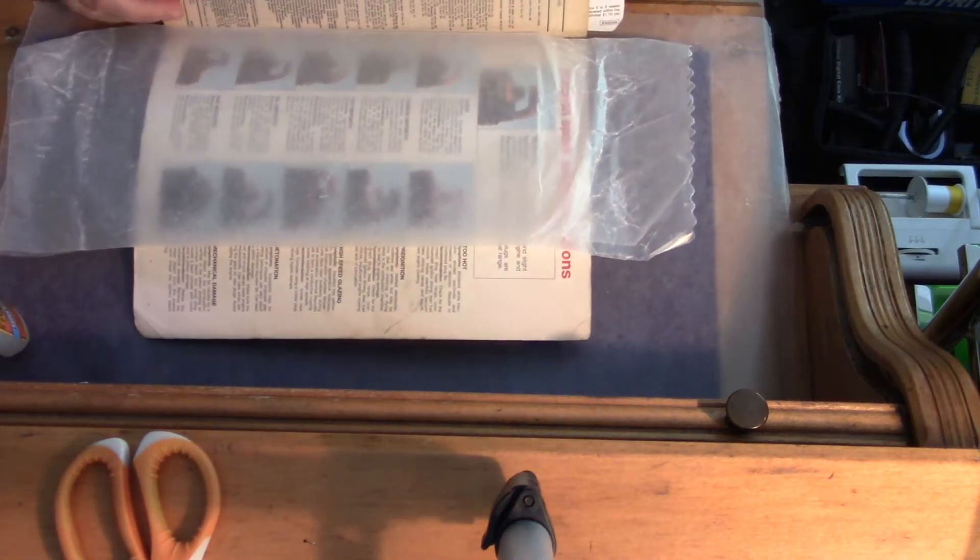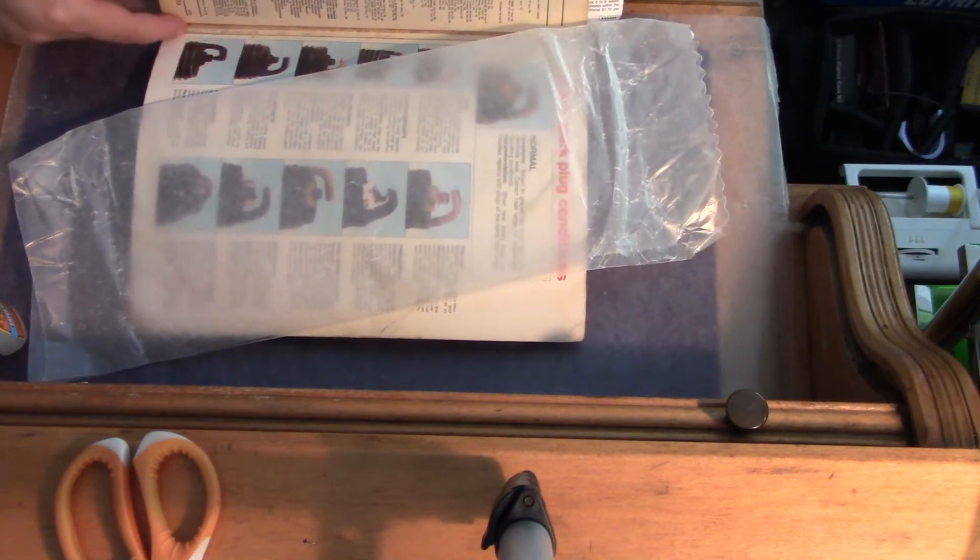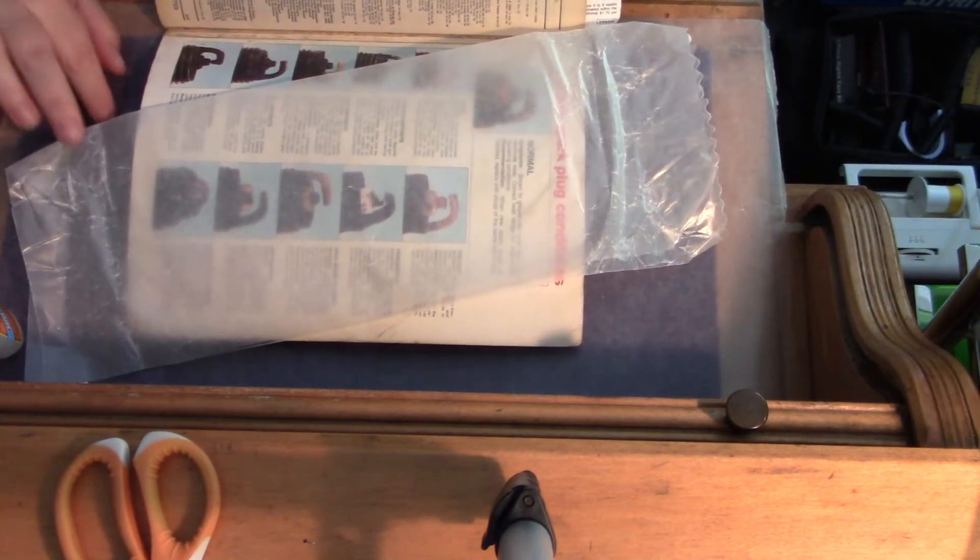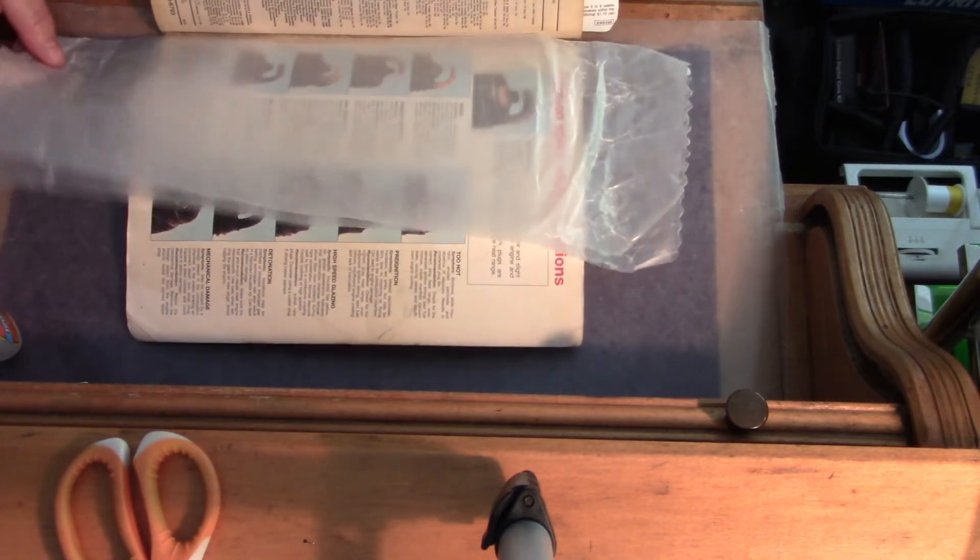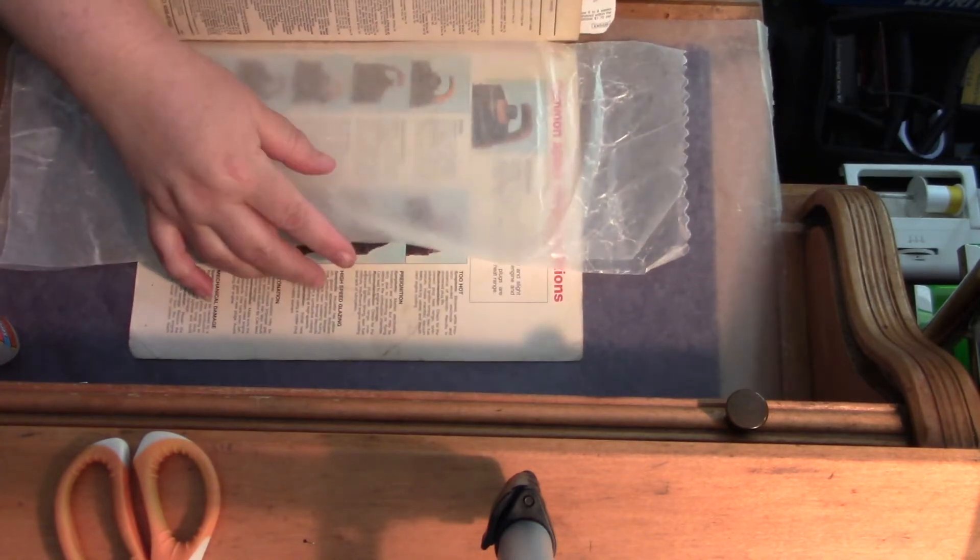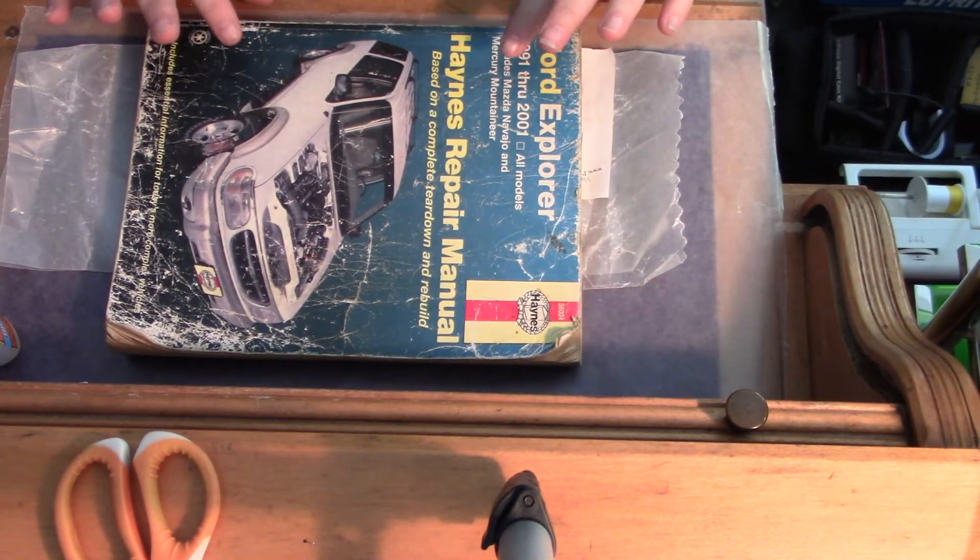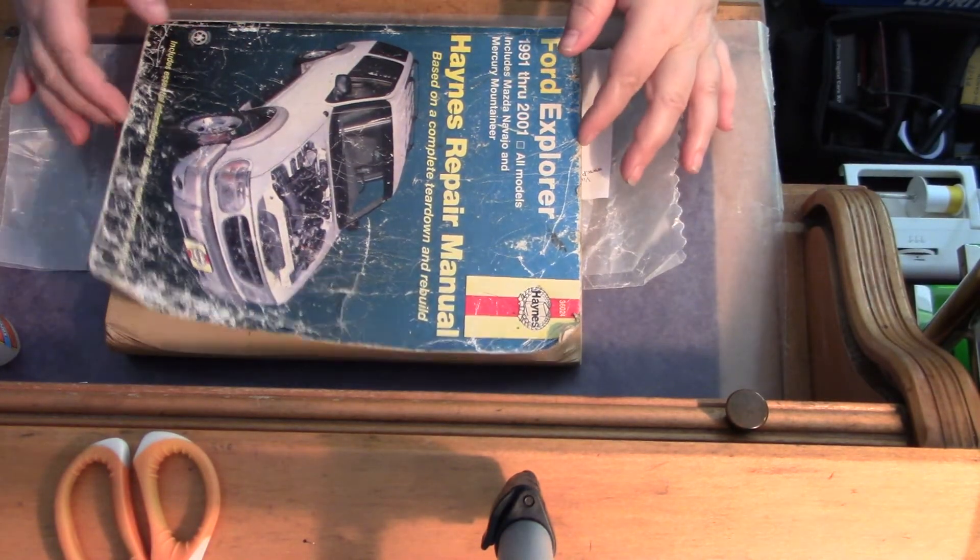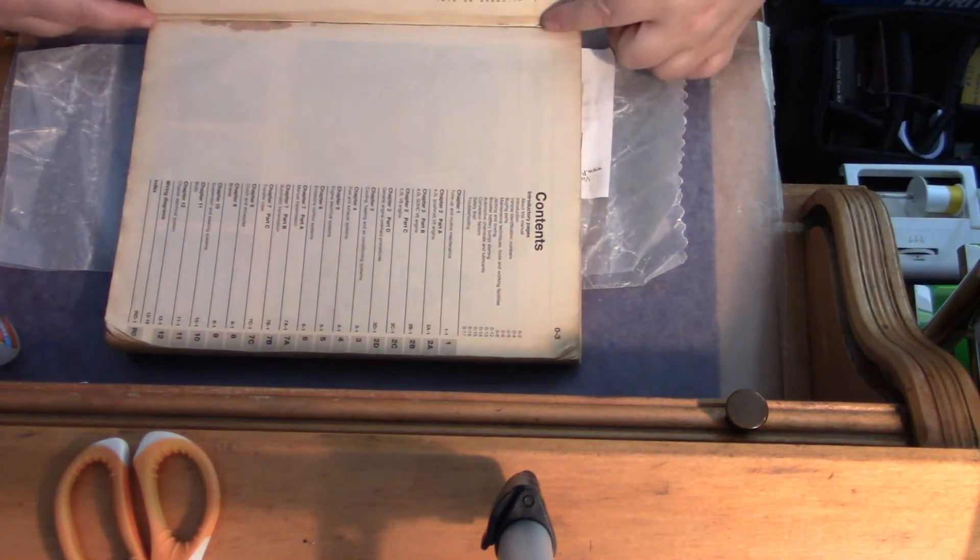However, it did not get squeezed together tightly enough at the back, so this part was still loose when I checked it. So I have reapplied glue, and I have put back my greaseproof paper to keep it from soaking out onto the cover. And I'm going to prepare a reinforcement strip to go into the hinge right here.